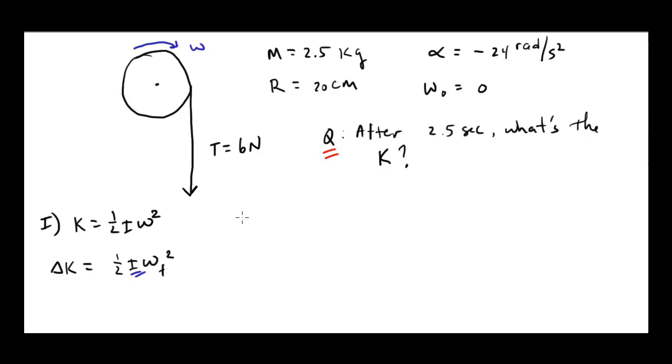Let's calculate I. For a disk, that's 1/2 m r squared. So 1/2 of the mass, that's 1.25 times 0.2 squared, which gives 0.05. And omega, how are we going to find omega? The omega isn't constant, right? There's an acceleration here, and we've got to take that into consideration.